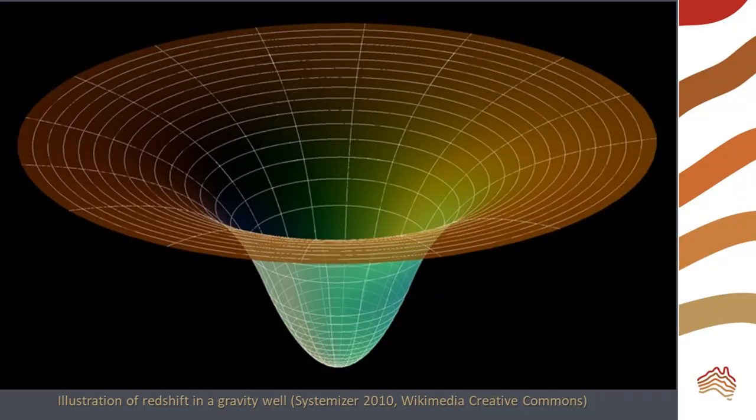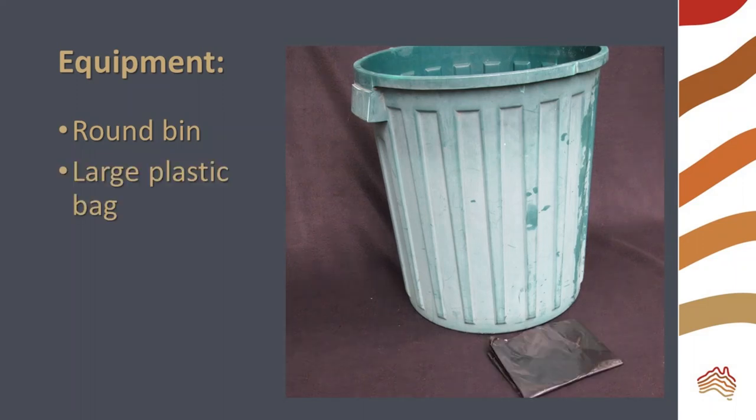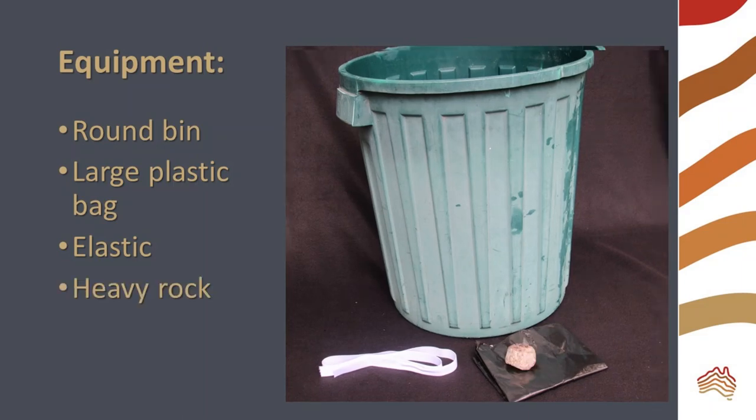Massive objects produce a dip in the space-time continuum. This is sometimes called a gravity well. We will model the effect of a gravity well using a round bin, a large plastic bag or sheet, some elastic, a heavy rock or lead weight, and a marble.